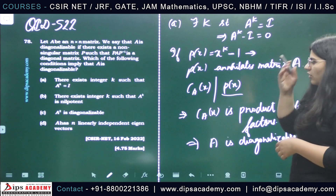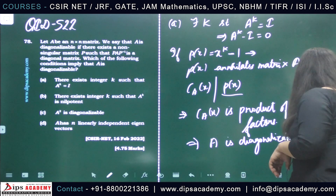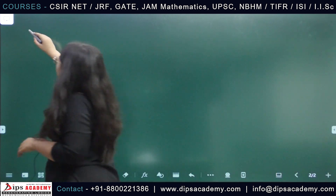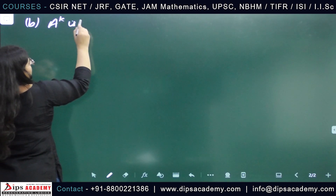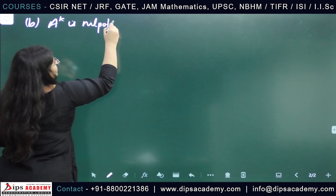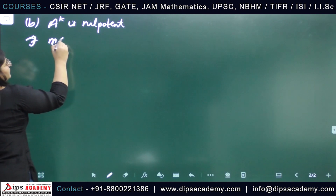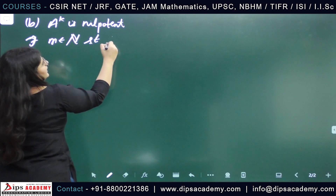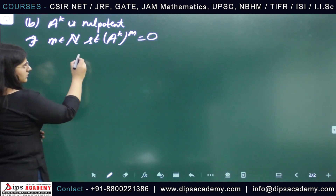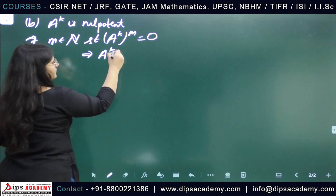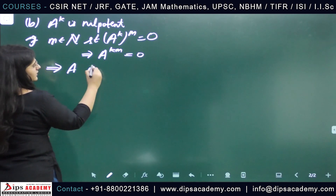Let's move to option B. Option B states that there exists an integer k such that A raised to the power k is nilpotent. From this, there exists m in the natural numbers such that (A^k)^m is the zero matrix, which implies A raised to the power km is the zero matrix. This implies the matrix A itself is nilpotent.